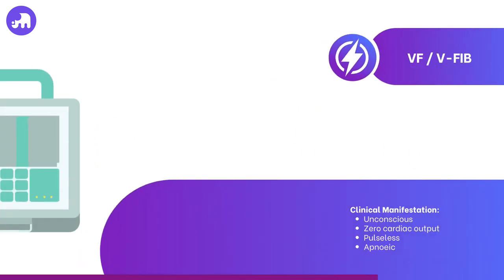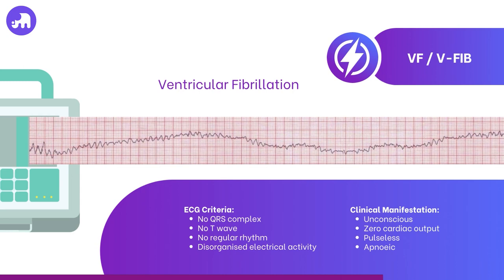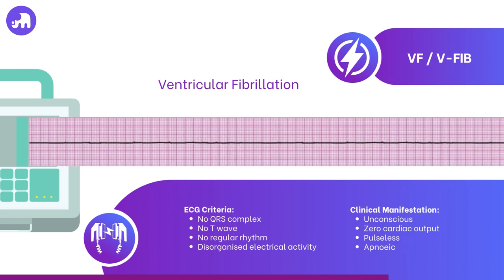Moving on to the next life-threatening shockable rhythm, ventricular fibrillation. On the ECG, VF presents as a chaotic and rapid series of waveforms of varying amplitude and shape. There's no recognisable QRS complex, T-wave or regular rhythm. The electrical activity is highly disorganised, representing multiple random impulses firing within the ventricles, resulting in the heart quivering rather than effectively contracting. A patient in VF will be unconscious, with an absence of pulse or blood pressure. Breathing will also be absent, leading to cyanosis. Without prompt treatment, both VF and VT will typically progress to asystole, representing a complete absence of cardiac electrical activity.